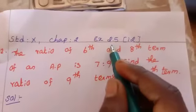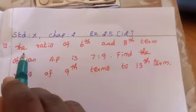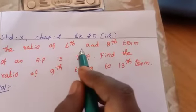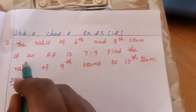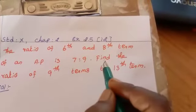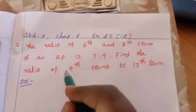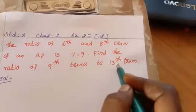Next exercise 2.5, 12th sum. The ratio of 6th and 8th terms of an AP is 7 is to 9. Find the ratio of 9th term to 13th term.